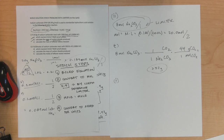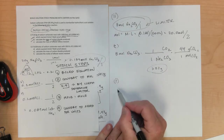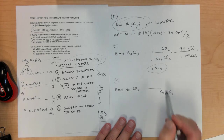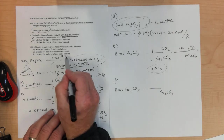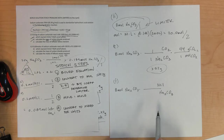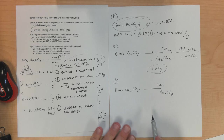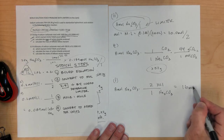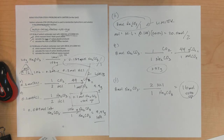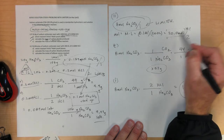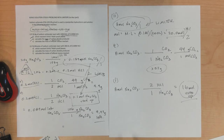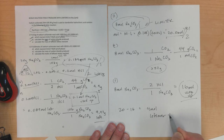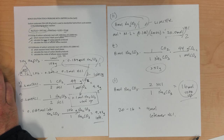Letter F: calculate the leftover amount of the excess reagent. Always start with the limiter. Take 8 moles of Na2CO3 and do the mole-to-mole ratio to find how much HCl is used up: for every 1 Na2CO3 there are 2 HCl, so 8 times 2 is 16 moles of HCl used up. We started with 20 moles of HCl and used 16 moles, so 20 minus 16 leaves 4 moles of HCl remaining. Good luck on the Chapter 3-4 test.